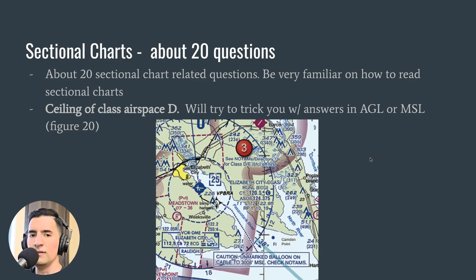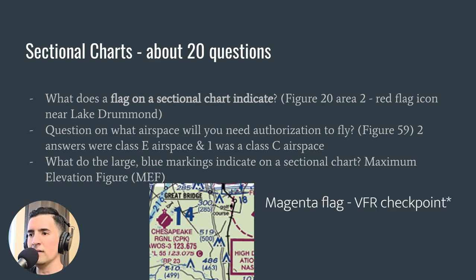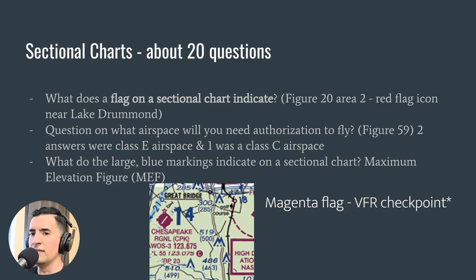They love figure 20 — I saw three or four questions on that sectional chart alone. What does a red flag on a sectional chart indicate? Go to figure 20, area 2, near Lake Drummond — there's a red flag icon. It's a visual checkpoint indicator for pilots, and the FAA wants you to know it signals increased flight activity in that area.